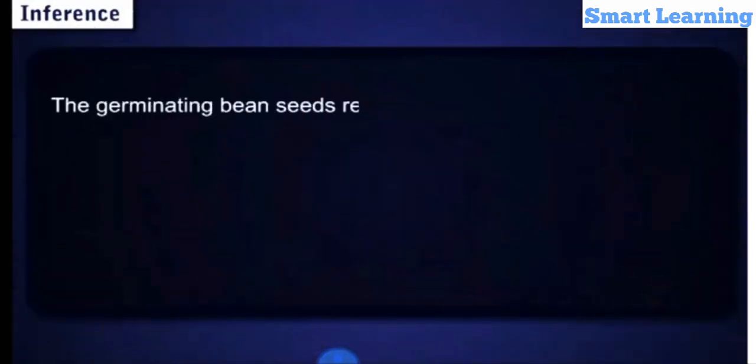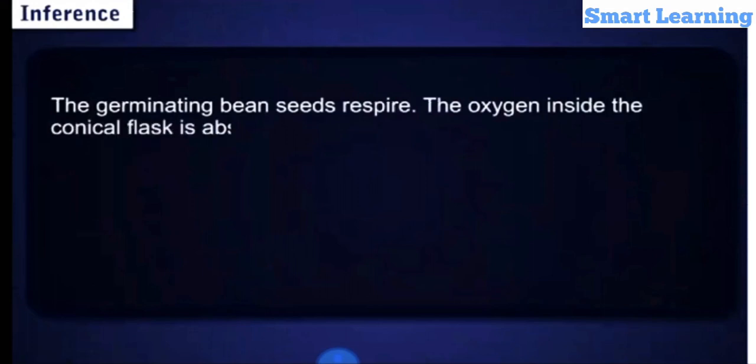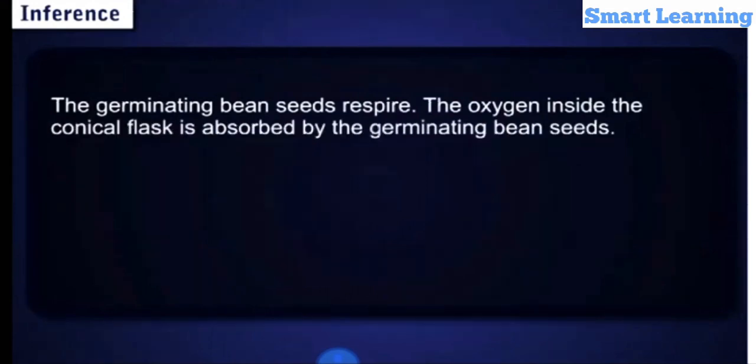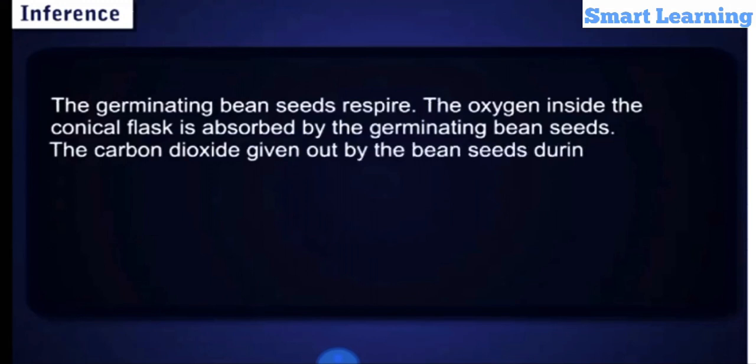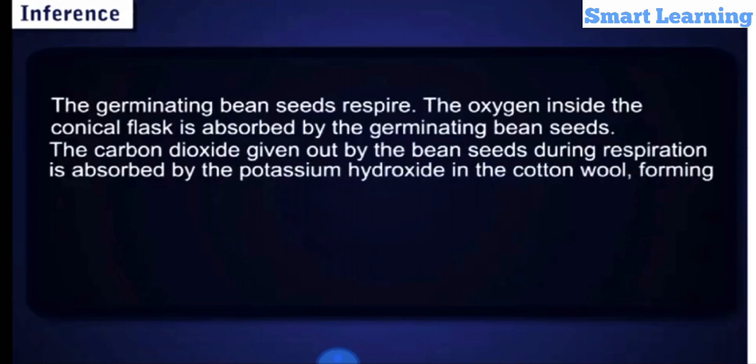Explanation: The germinating bean seeds respire. The oxygen inside the conical flask is absorbed by the germinating bean seeds. The carbon dioxide given out by the bean seeds during respiration is absorbed by the potassium hydroxide in the cotton wool, forming potassium carbonate.